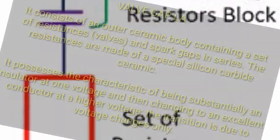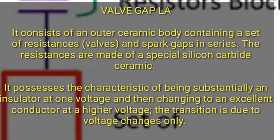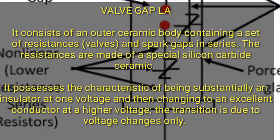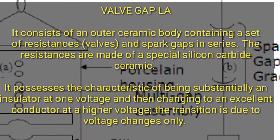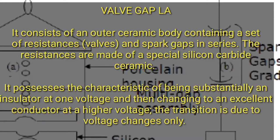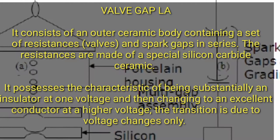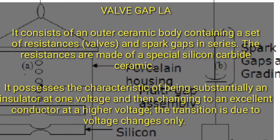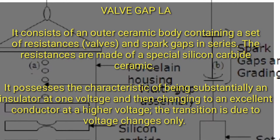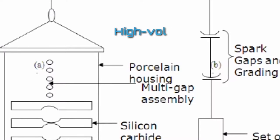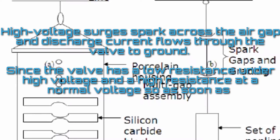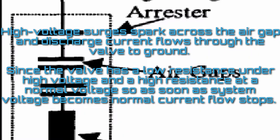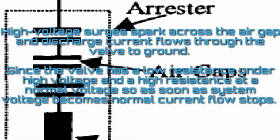Now the valve type lightning arrestor. The valve gap element consists of an outer ceramic body containing a set of resistances, valves, and spark gaps in series. The resistances are made of a special silicon carbide ceramic, which possesses the characteristic of being substantially an insulator at normal voltage and then changing to an excellent conductor at a higher voltage. This transition is due to voltage changes only. High voltage surges spark across the air gap and discharge current flows through the valve to ground. Since the valve has low resistance under high voltage and high resistance at normal voltage, as soon as the system voltage becomes normal, current flow stops.